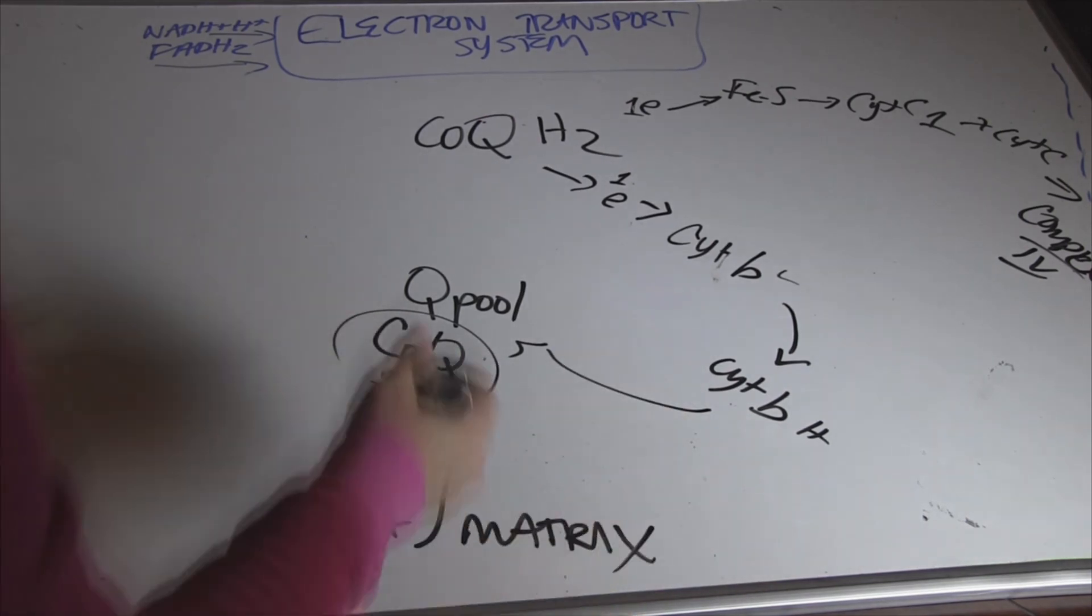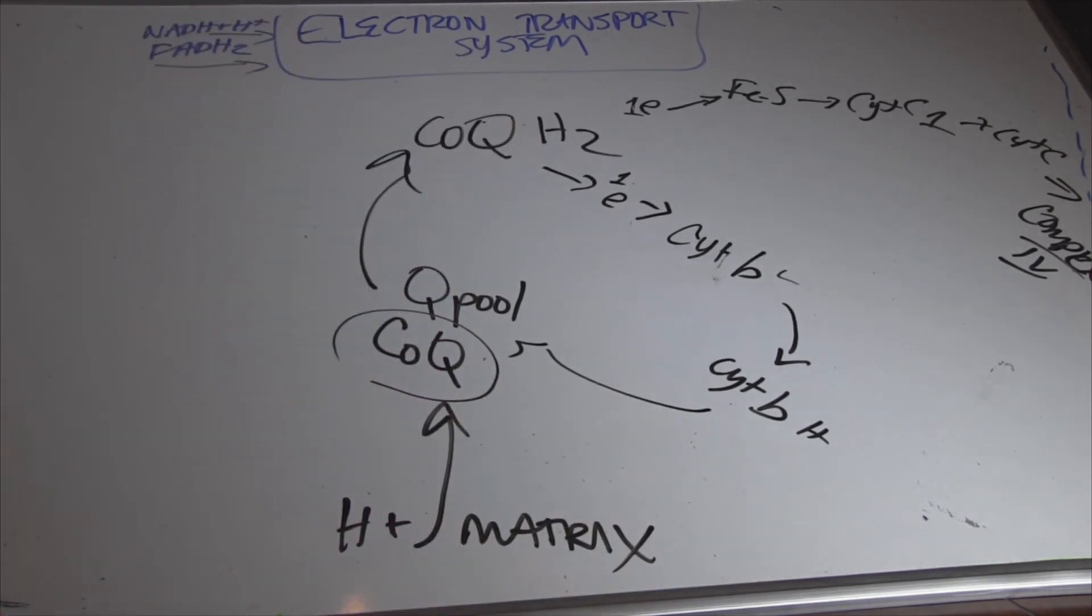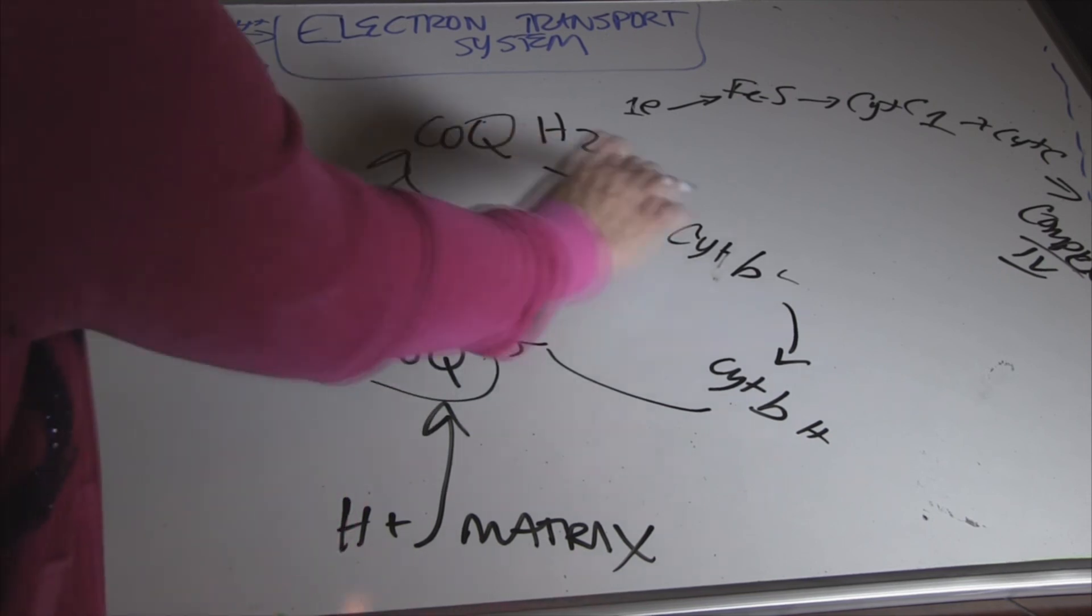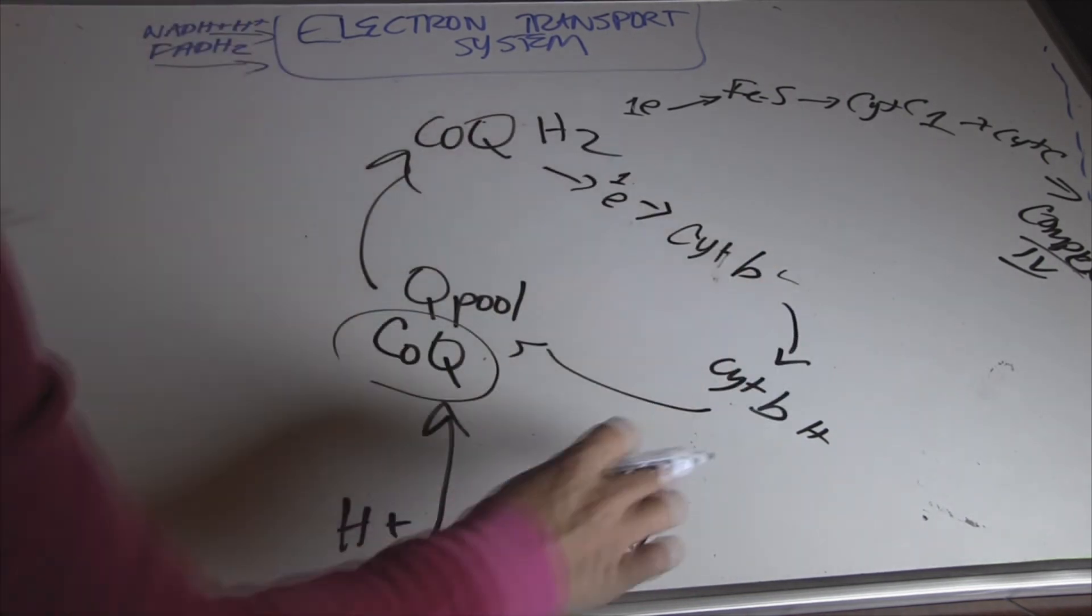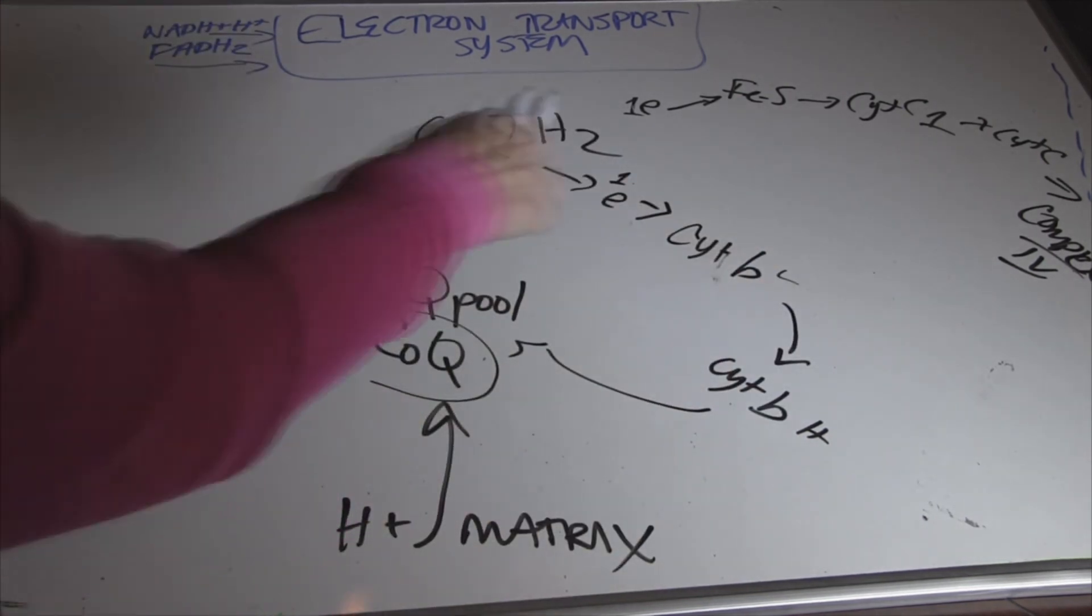And when it does, it's going to become the reduced form. So this is what this other electron does. It is going to be cycling in this Q pool.